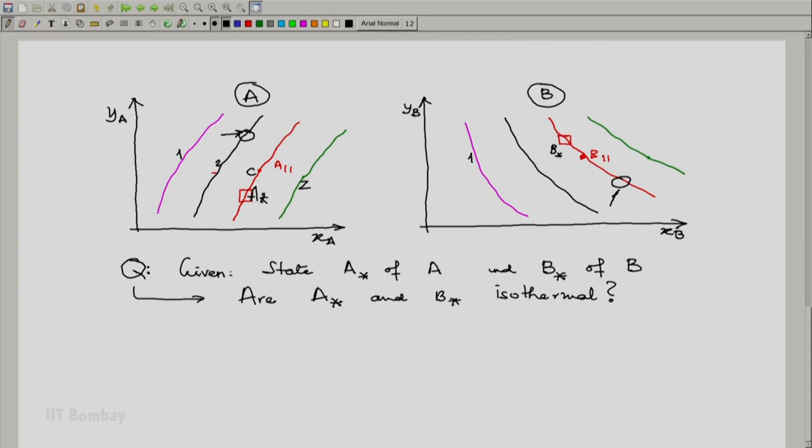This would be label 1, this would be label 2, this would be label C, this could be label Z. What do these labels mean?